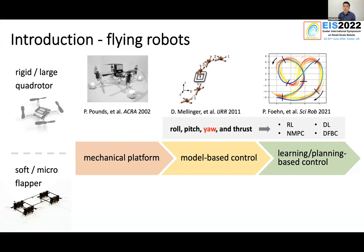This includes reinforcement learning and model-predictive control. But all of these advanced control algorithms are based on the fact that we have really good low-level control, which means we have the capability of controlling roll, pitch, yaw, and thrust independently. This is what happened in the quadrotor community.